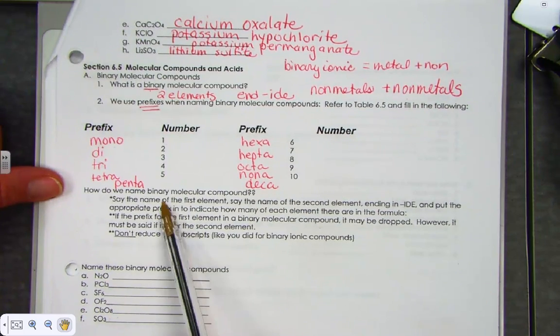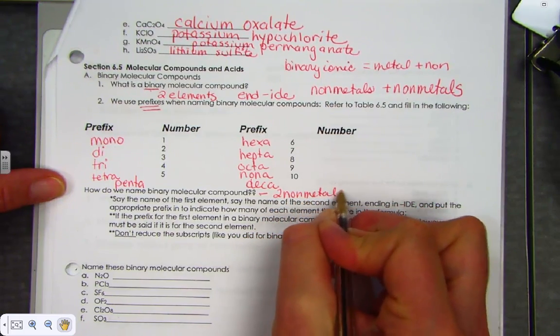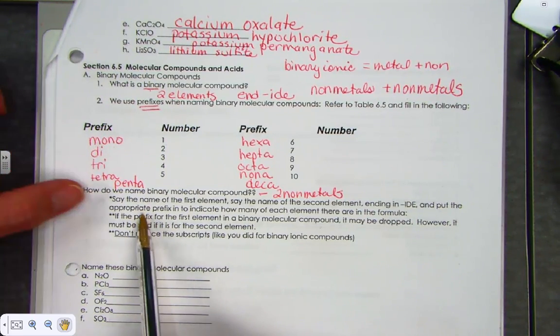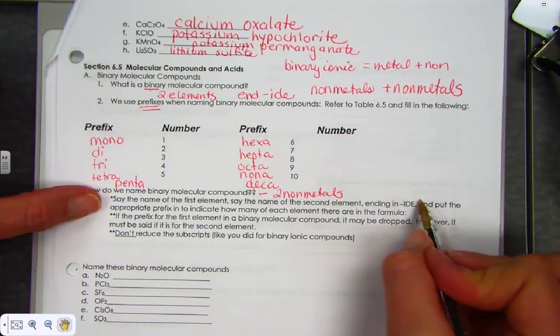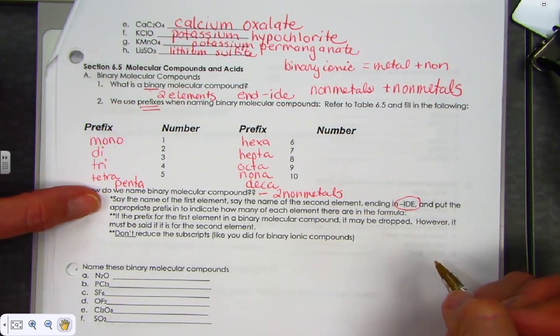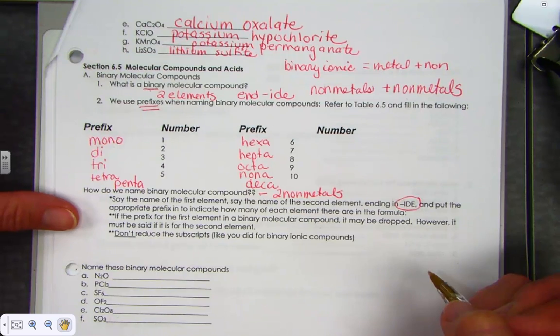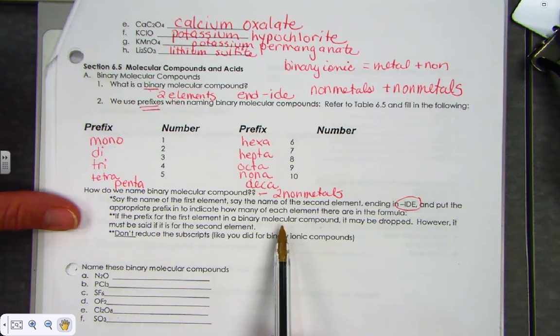When we name binary molecular compounds, remember two nonmetals hooked together. Two nonmetals make a molecular compound. The rules for naming these compounds are quite simple. We simply say the name of the first element. We say the name of the second element, but it ends in ide. The last name will end in ide. And we put the appropriate prefix to indicate how many of each element there are in our chemical formula.